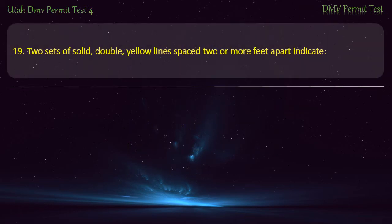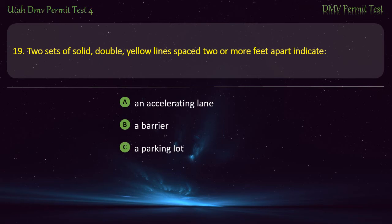Question 19. Two sets of solid double yellow lines spaced two or more feet apart indicate: An accelerating lane; A barrier; A parking lot; or Two-way traffic? Answer: A barrier.